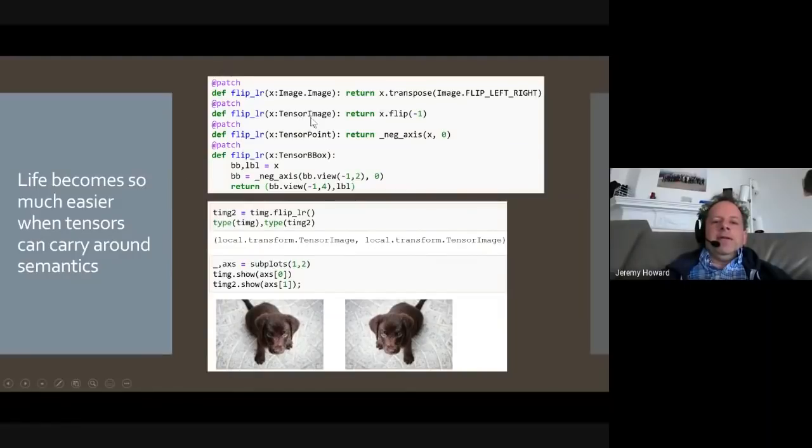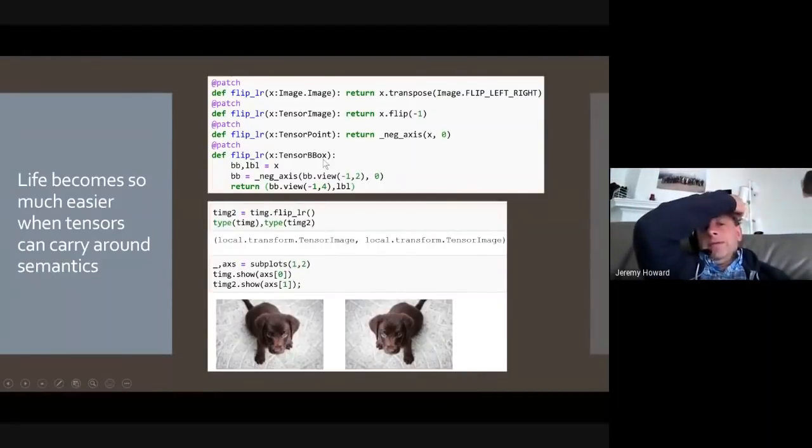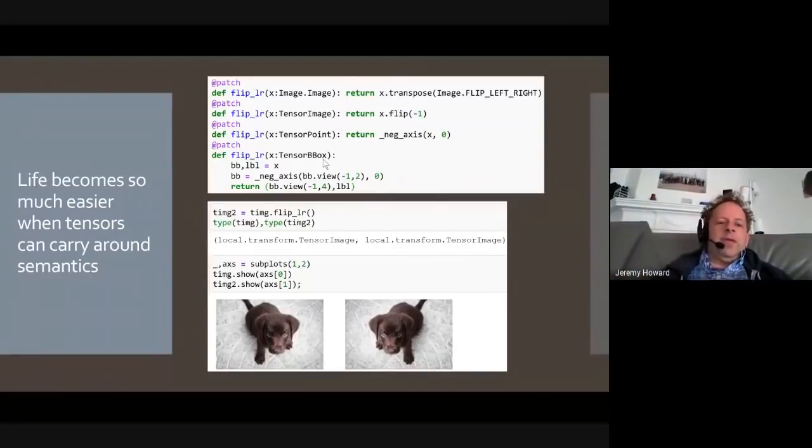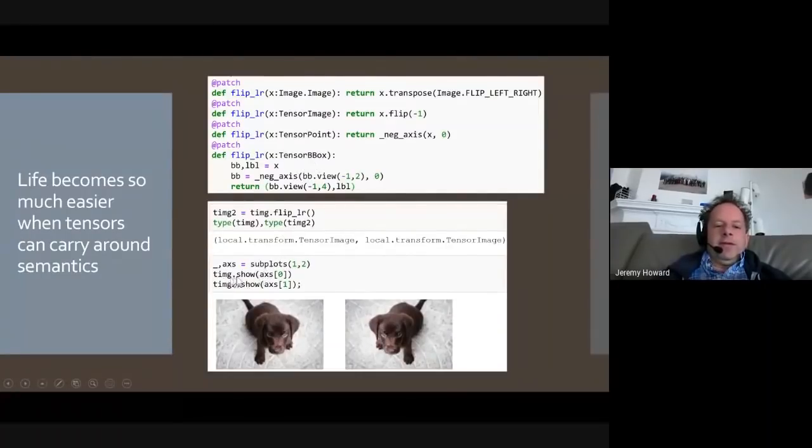So you can now have a tensor image, tensor point, tensor bounding box, and you can define a flip left right for each. And so this is some of the source code from, we've written our own computer vision library, so that now you can say flip LR and it flips the puppy. And if it was a key points, it would flip the key points. If it was a bounding box, it would flip the bounding boxes, and so forth. So this is an example of how tensors which carry around semantics are nice. It's also nice that I didn't just say dot show, right? So dot show is something that's defined for all fast AIV2 tensor types, and it will just display that tensor.